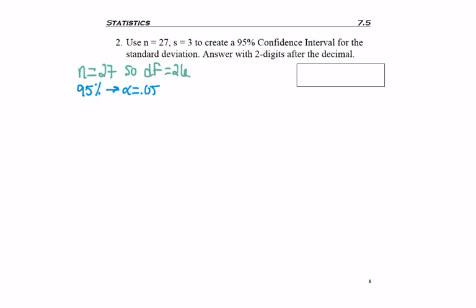95% confidence means alpha is 5%, or 0.05, and alpha over 2 is 0.025. Chi-squared right is row 26, column 025, to give me 41.923.